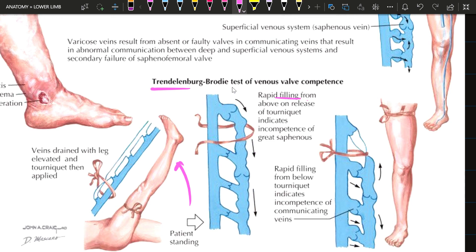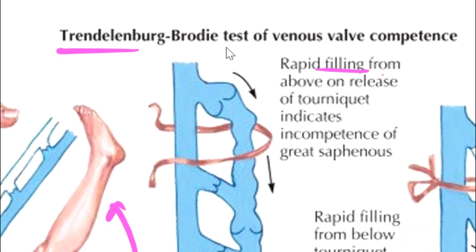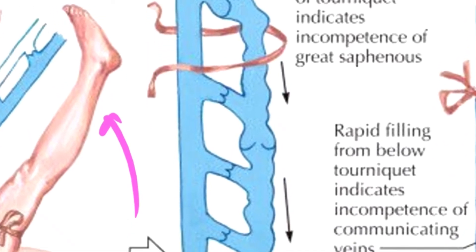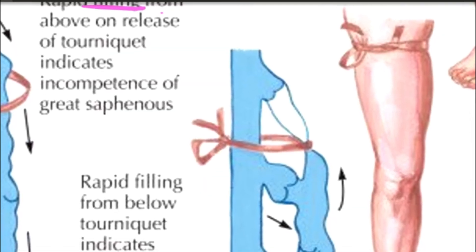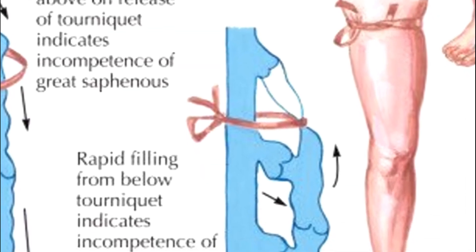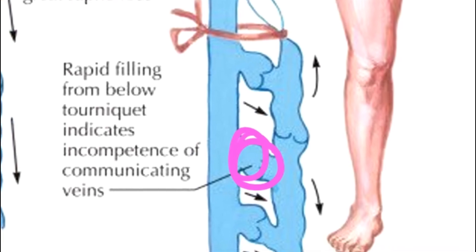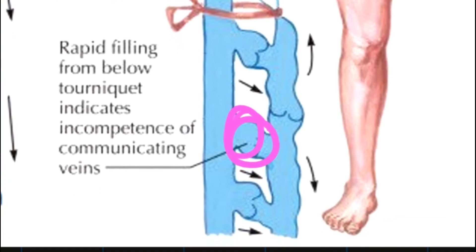Rapid filling of the great saphenous vein from above on release of pressure indicates incompetency of the valves in the superficial veins. If pressure is maintained, gradual filling of the varicose veins indicates incompetency of the valves present in the perforators. Thank you.